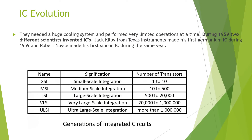Coming to IC evolution: the IC was invented by Jack Kilby in 1958–59, who made the Germanium IC. This was followed by Robert Noyce, who made the first silicon IC. From there, integration scales progressed — from Small Scale Integration with fewer than 10 transistors, to Medium Scale Integration up to 500, then VLSI with less than a million transistors, and finally ULSI with more than a million, continuing to grow with nanotechnology.